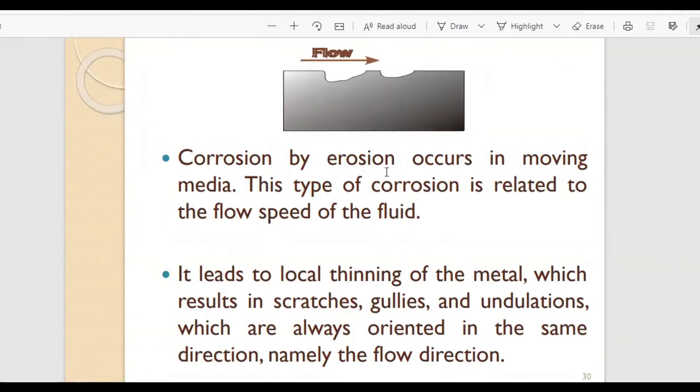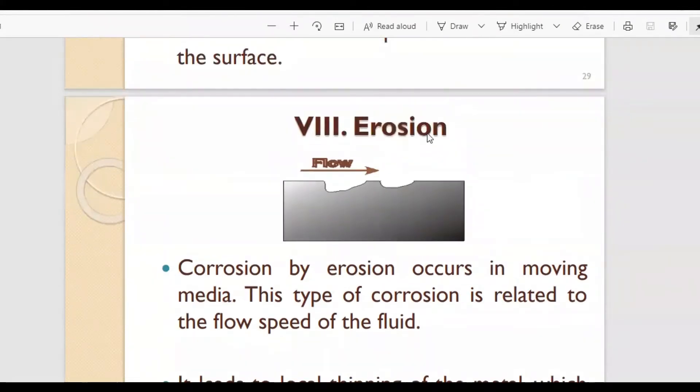Corrosion by erosion occurs in moving media. This type of corrosion is related to the flow speed of the fluid. When you see a metal tube or pipe, if liquid is flowing—it can be water or some oil or hot gases—it will lead to corrosion by erosion, which is related to how fast the fluid is flowing.